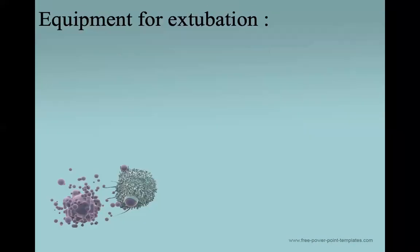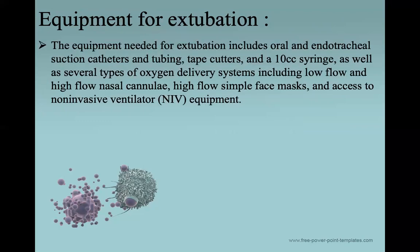Once the cuff leak test is passed and the patient is ready for extubation, what equipment must be ready? Equipment needed for extubation includes oral and endotracheal tube suction catheter and tubing, tape cutter, a 10 cc syringe, as well as several types of oxygen delivery systems including low-flow and high-flow nasal cannula, high-flow simple face mask, access to non-invasive ventilation equipment, and access to re-intubation supplies if extubation fails.